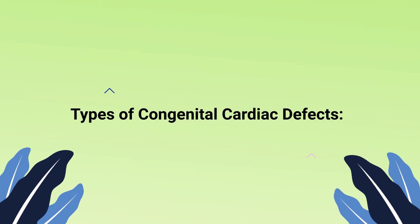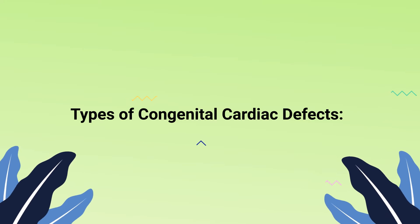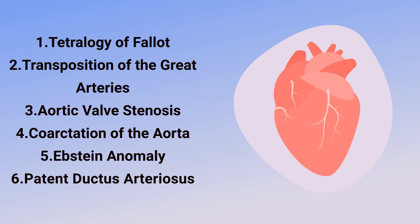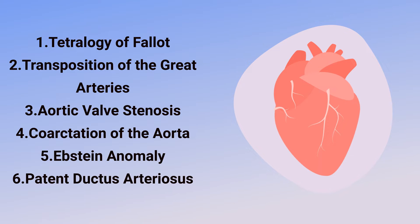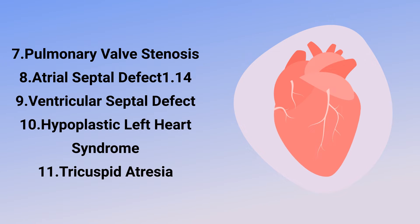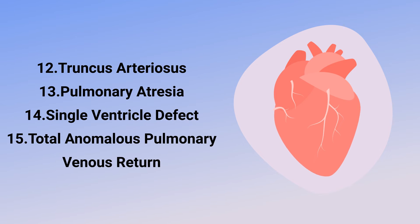Some of the most common types include: tetralogy of Fallot, transposition of the great arteries, aortic valve stenosis, coarctation of the aorta, Ebstein anomaly, patent ductus arteriosus, pulmonary valve stenosis, atrial septal defect, ventricular septal defect, hypoplastic left heart syndrome, tricuspid atresia, truncus arteriosus, pulmonary atresia, single ventricle defect, and total anomalous pulmonary venous return.